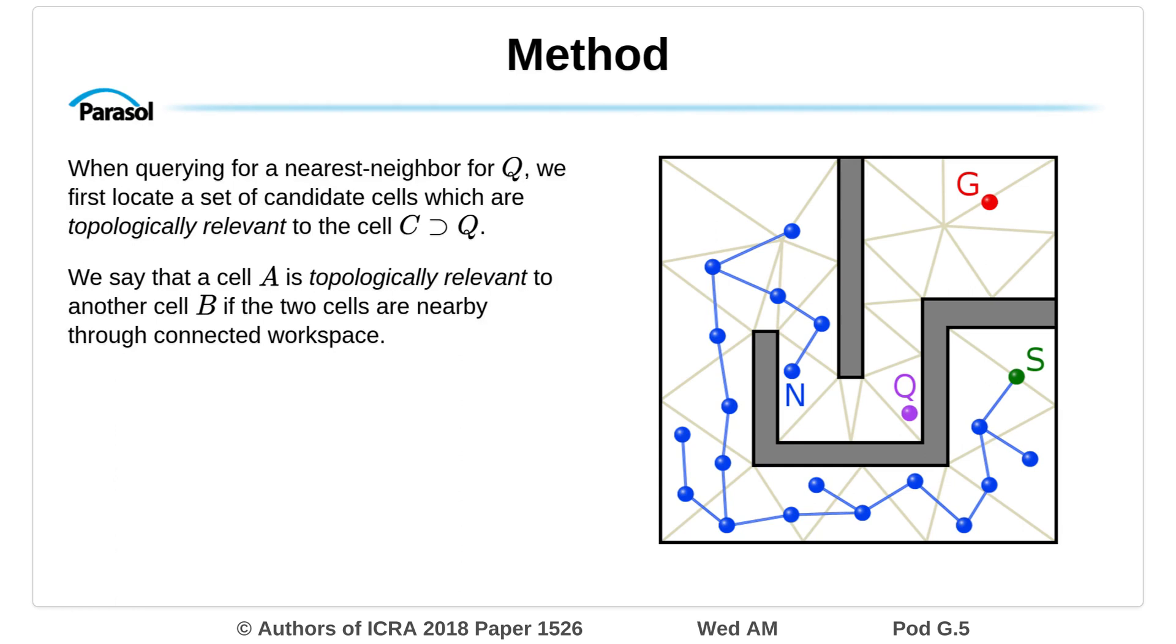When querying for a nearest neighbor for Q, we first locate a set of candidate cells which are topologically relevant to the cell C containing Q. We say that a cell A is topologically relevant to another cell B if the two cells are nearby through connected workspace.